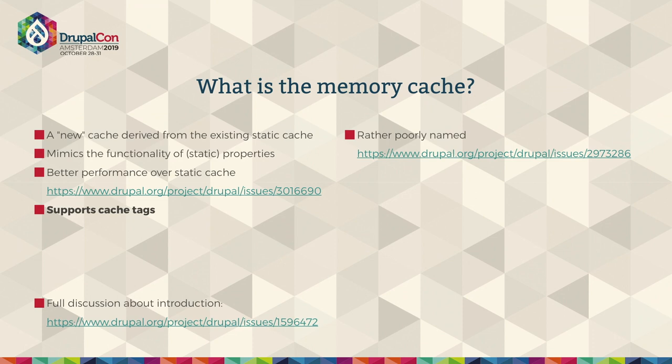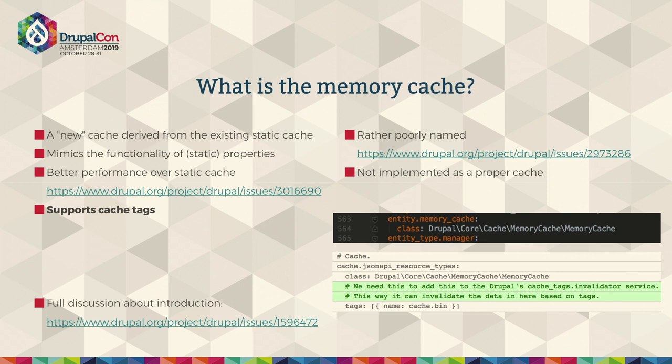Although it's rather poorly named — there is an issue about that too — it's called the entity memory cache, but you can basically use this for any in-memory cache. You don't just need to use it for entities. And it's not implemented as a proper cache by default by the entity API. It's defined just as a service, but nothing else. So this means that in the entity classes, they still need to manually invalidate their cache tags and everything. JSON API, for instance, ran into that.